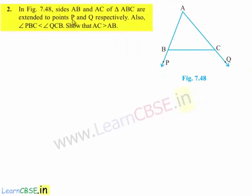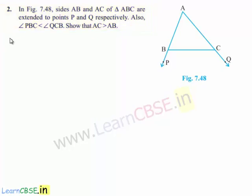Moving on to the second question. In figure 7.48, sides AB and AC of triangle ABC are extended to points P and Q respectively. Also, angle PBC is less than angle QCB. Show that AC is greater than AB.